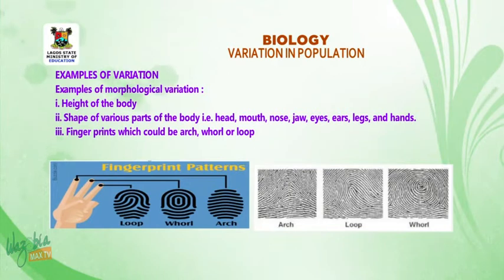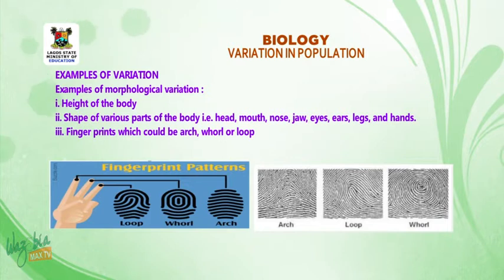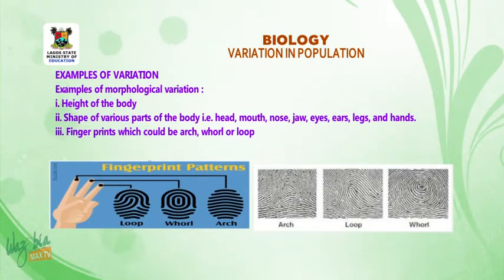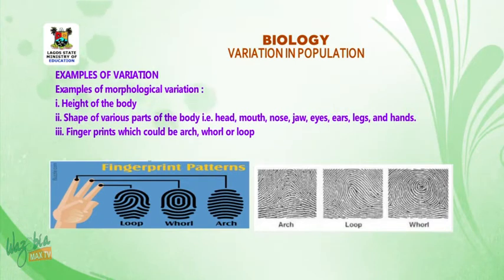Examples of morphological variation: 1. Height of the body. 2. Shape of various parts of the body, that is, head, mouth, nose, jaw, eyes, hair, legs, and hands. 3. Fingerprints, which could be hatch, wall, or loop.